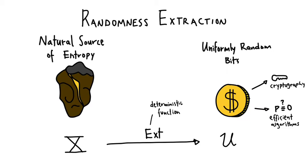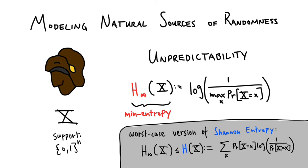Randomness extraction is a deterministic function that takes as input some randomness source x, and we want the output of this function to be statistically close to uniform. What do we mean? How do we model a natural source of randomness here?